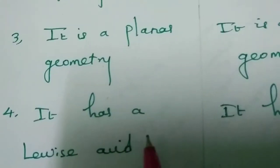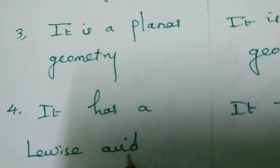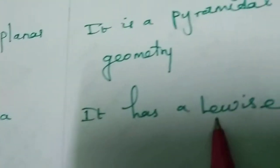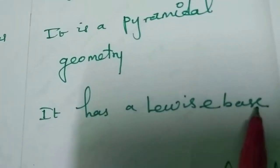Carbocations act as Lewis acids, while carbanions act as Lewis bases.